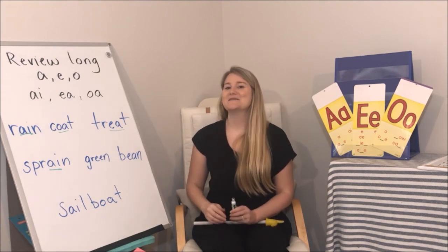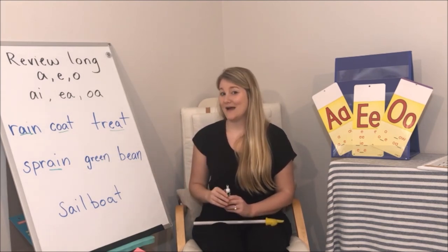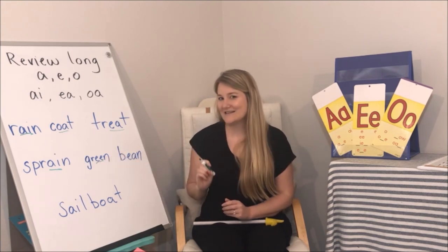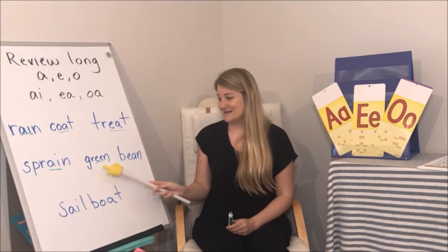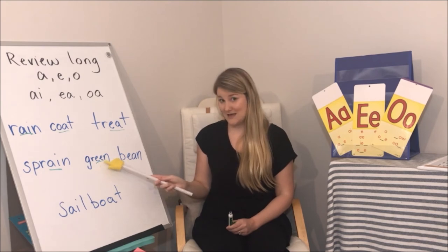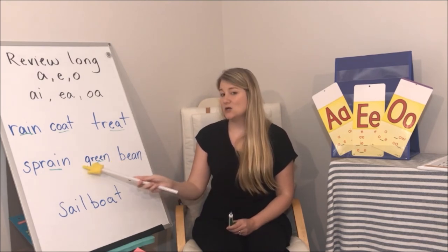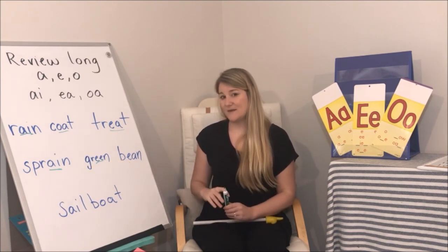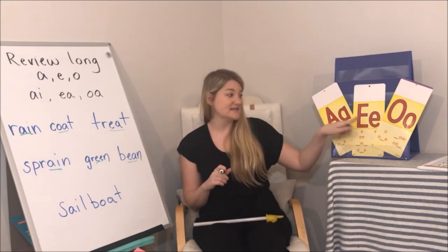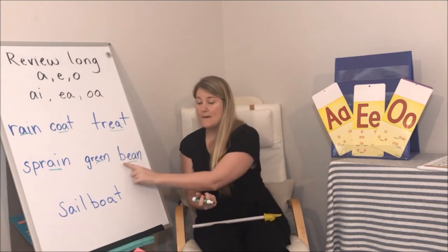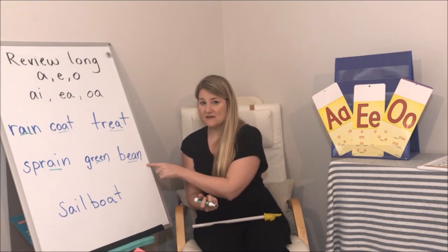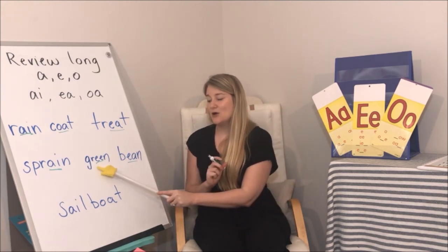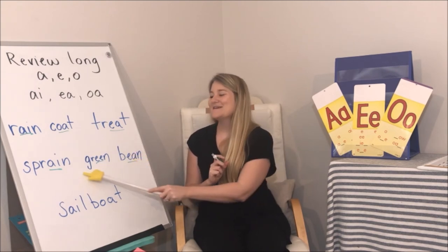What is the vowel spelling in this word? I kind of tricked you — I tucked in a little E-E, not just E-A. Ready? G-R-E-E-N. Blend: green. Now the vowel spelling in this word? There's our E-A. E-A says E. Ready? B-E-A-N. Bean. Let's put these two words together — green bean!